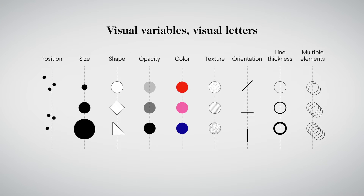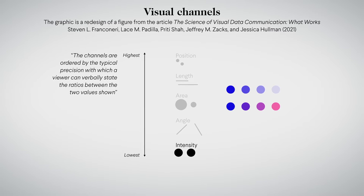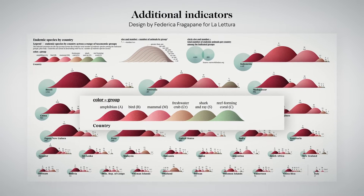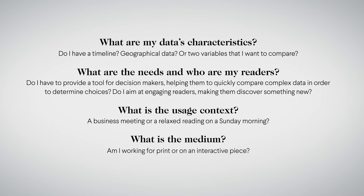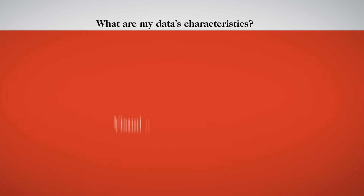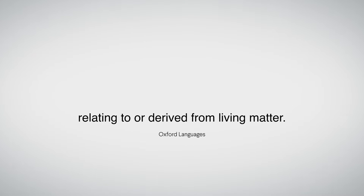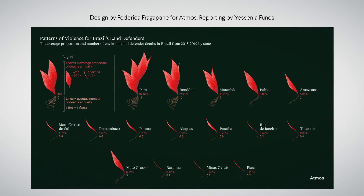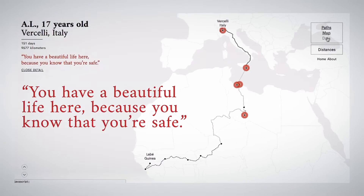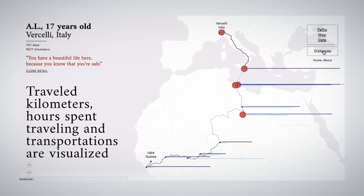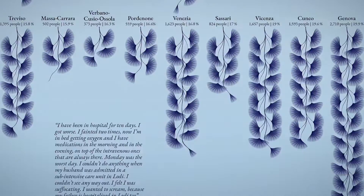First, I'll introduce the process of visually translating content, and we will analyze the role of perception. It's important to think about how readers can see our visual representations. I'll propose some questions to start with when we approach a new project, and I will talk about the role of written and visual worlds. Then I'll show you how we can tell stories with data exploring some case studies, and I will talk about using and sometimes challenging visual metaphors.